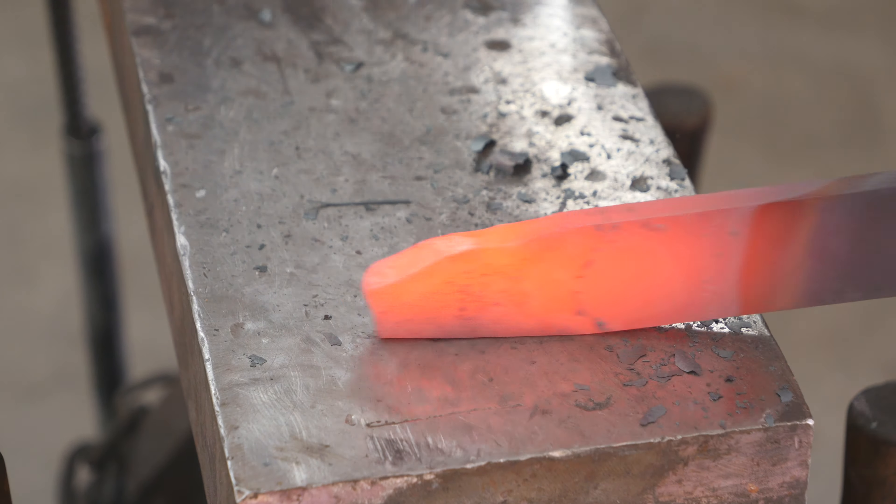You can see me checking the straightness of the blade like 150 million times it felt like. It takes me a while to get them straight but it's really important at this stage because if you don't get a good straight blade you might not have enough material there to grind it straight later.